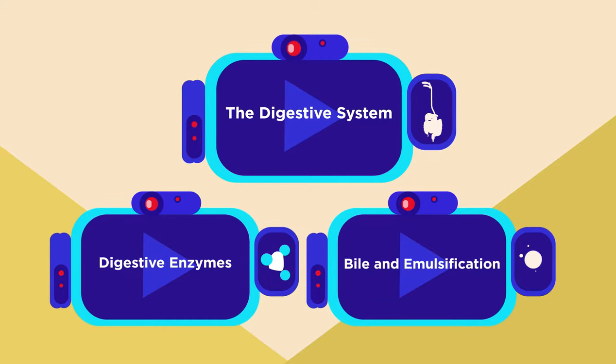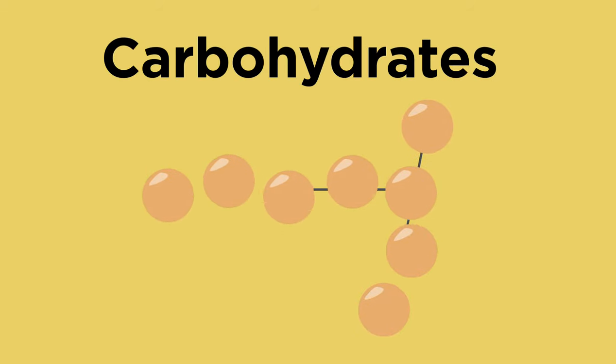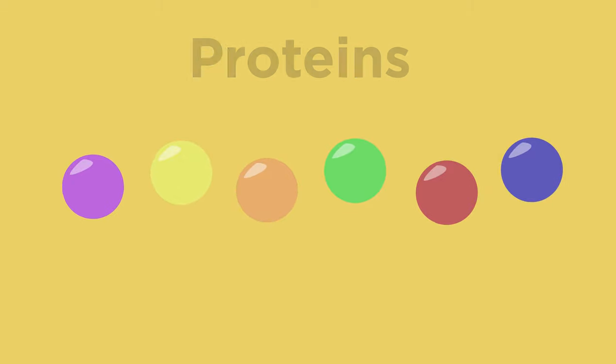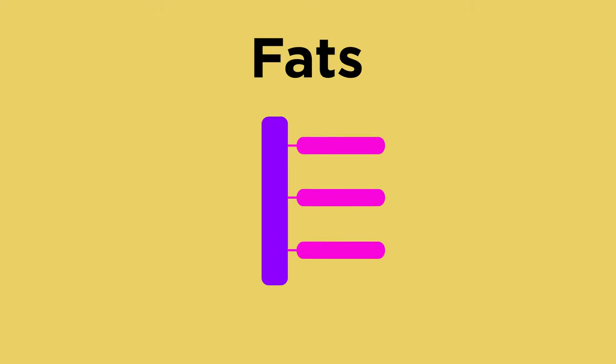As they move through the digestive system, carbohydrates are broken down into sugars, proteins are broken down into amino acids, and fats are broken down into fatty acids and glycerol.